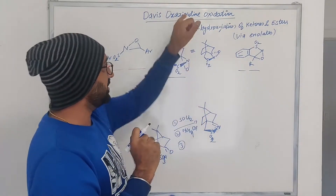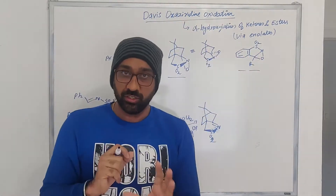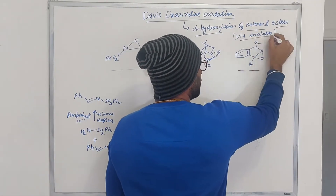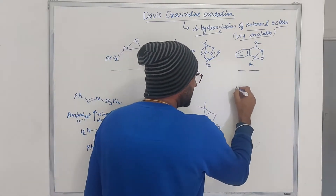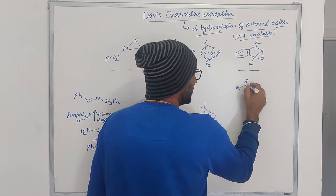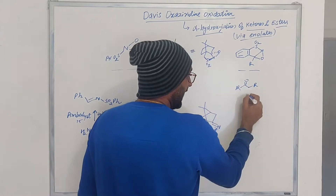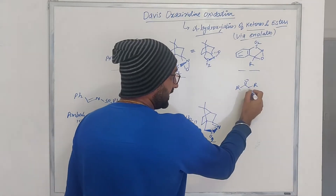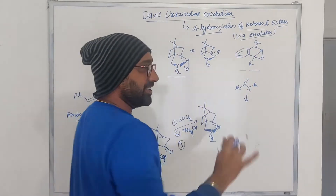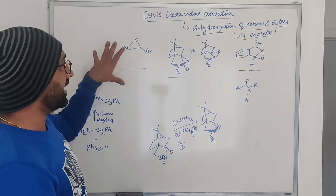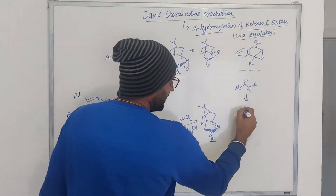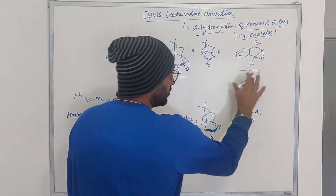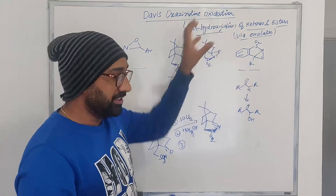The main reaction use is the alpha hydroxylation of ketones and esters, and the reaction goes by enolate. In a nutshell, if I have this ketone and I want to carry out the hydroxylation at the alpha position, then these are the reagents I am going to use, and these are called Davis-Oxaziridine. So basically if you want to carry out such transformations, this is one of the very important reactions of this reagent.